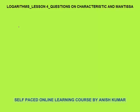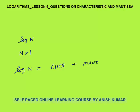Hello, this is logarithms lesson 4. In this I will discuss questions on characteristics and mantissa. Log n — considering base 10 — can be calculated when n is positive. When n is greater than 1, log n equals characteristics plus mantissa. Characteristics is equal to one less than the number of digits in n.